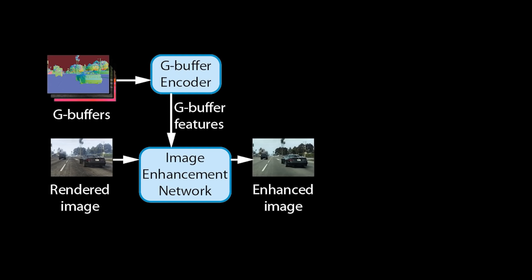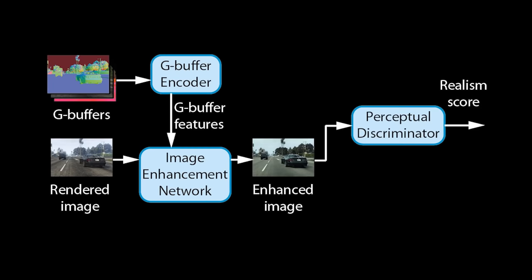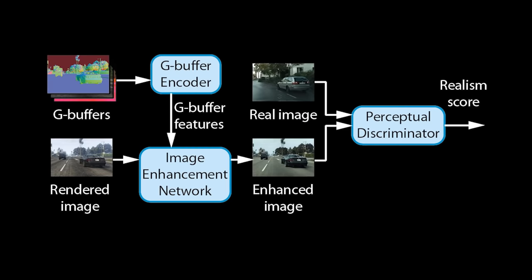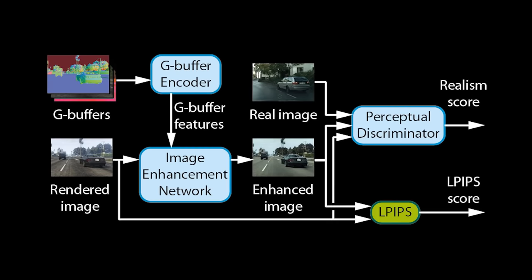To train our networks for enhancing realism, we employ a perceptual discriminator. For each image it takes in, it produces a realism score. To make it understand what the real world looks like, we also feed it real photos. To ensure that our networks retain the structure of rendered images, we further add them to the discriminator inputs and employ a perceptual loss.